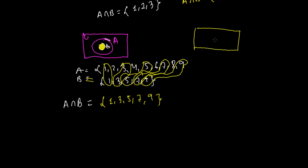Similarly, it may happen that A is inside B — you have a big set B and all elements of A are inside B. In that case, A intersection B equals A. This section — the A part — is your intersection.